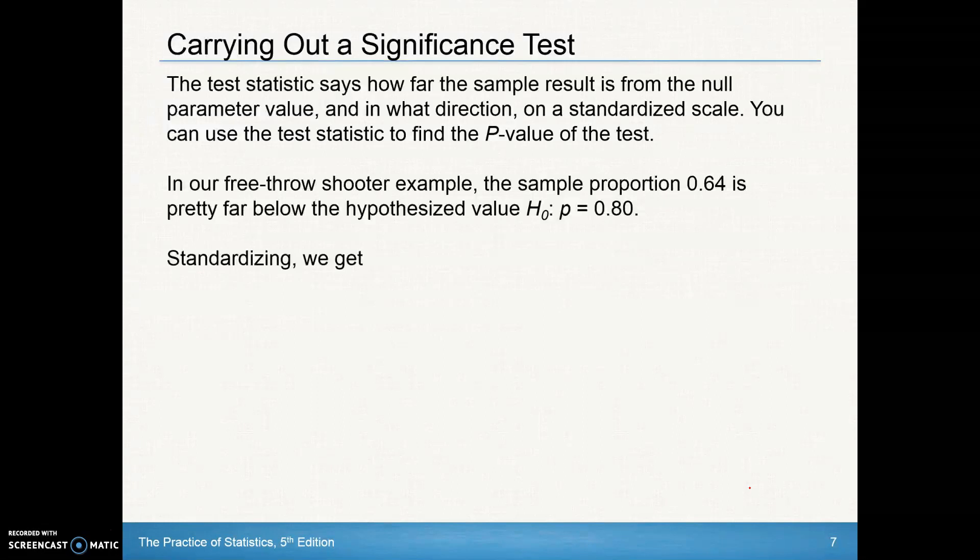So the test statistic says how far the sample result is from the null parameter values. It'll tell us how far it is in a z-score. In what direction? Negative be to the left and positive be to the right. So you can use that test statistic to find the p value of the test by using table A. In a separate video, we'll talk about how to do the calculator as well.